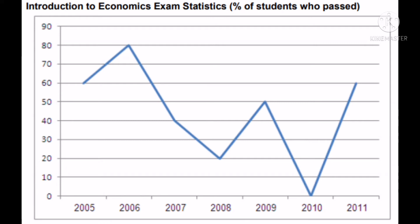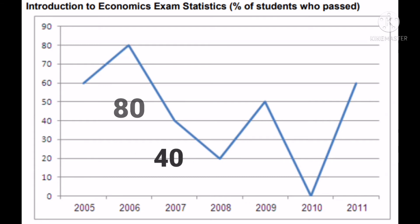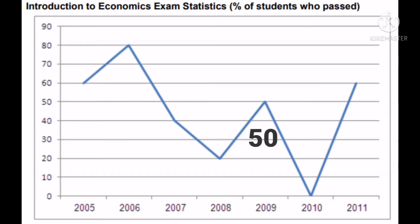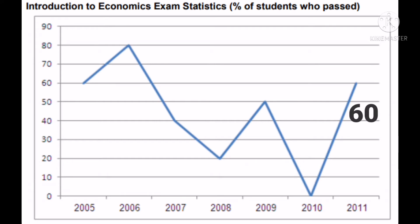Looking at the given data: in 2005 we have a 60% passing rate; in 2006, 80%; in 2007, 40%; in 2008, 30%; in 2009, 50%; in 2010, 0% passing; and in 2011, 60% passing. Take note that these figures represent the percent who passed.